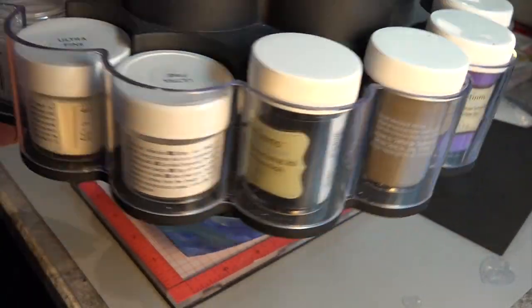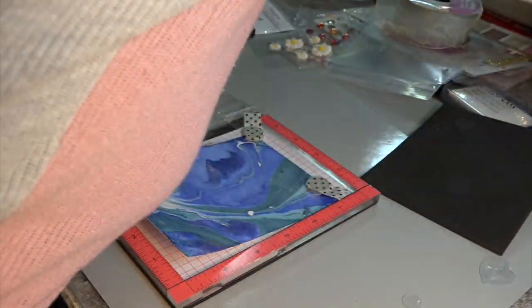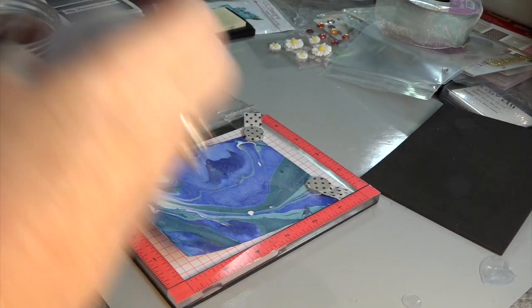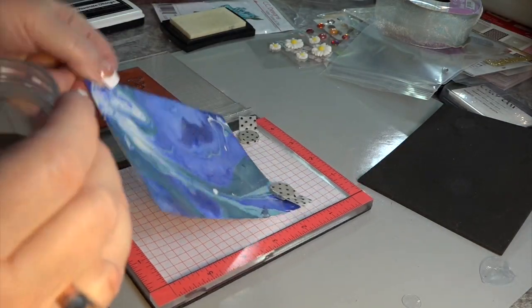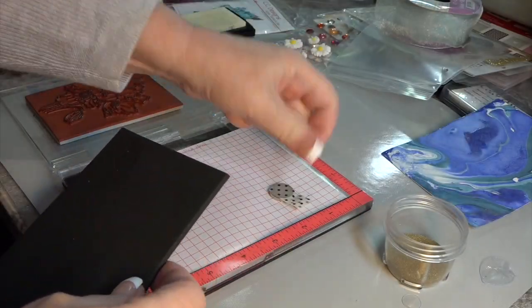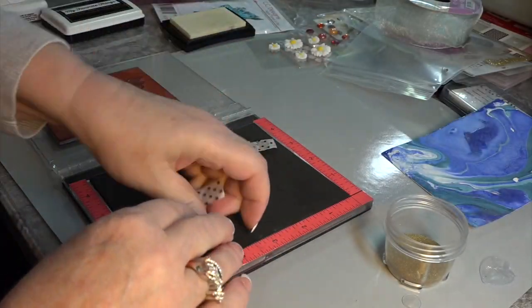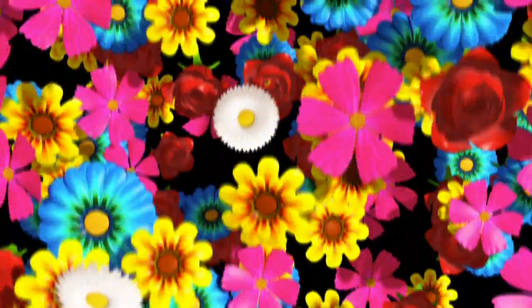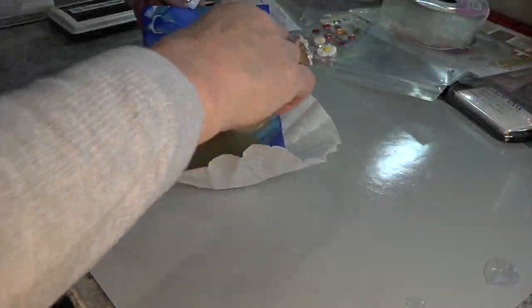And here I'm looking for gold super fine embossing powder. And that little spinner thing I got at a thrift store. And I'm telling you, I just love it. That's the times you wish you could get three or four of them. Because it holds so many of my powders. And it's so lightweight. So here we go.